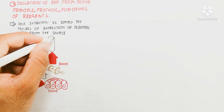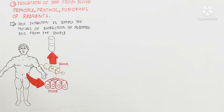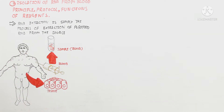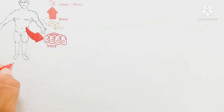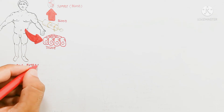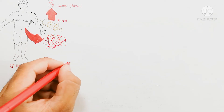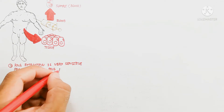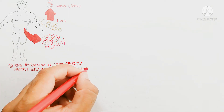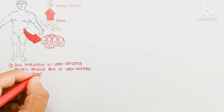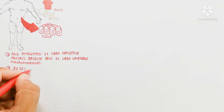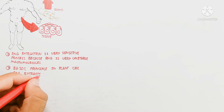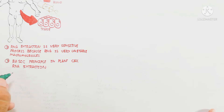RNA extraction is a very sensitive process because RNA is a very unstable macromolecule. For plant cell RNA extraction, we first take the sample into a test tube. The plant cell contains a cell wall and inside a cell membrane, so breakdown of the cell wall is a separate step.